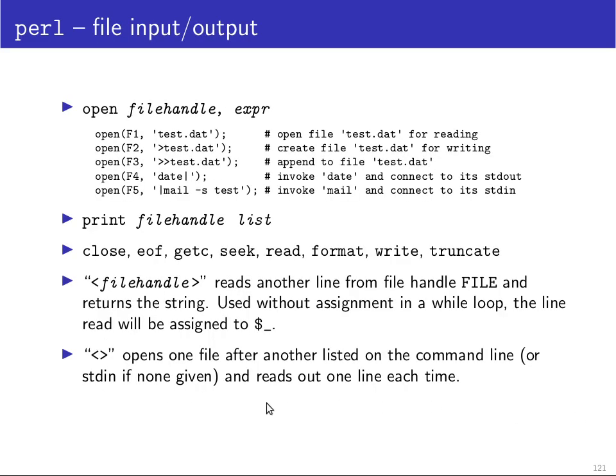How does file IO work? Like in other programming languages you have first to open a file then you get a file handle then you print into the file for example. When you hand over a file handle to print the file handle is not followed by a comma to distinguish it from the first element. So print expects a list of elements to be printed but if there is a file handle not followed by a comma then that is interpreted as a file handle not as the first list element. Then you can close, and you have similar standard file IO functions as you know in C: you can test have you reached the end of the file, get a character, seek to a position, read, truncate, write.